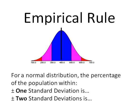What I'm going to do is talk to you about the empirical rule. It's a great rule to know when you're working with a normal distribution. Basically, what the empirical rule tells us is that 68% of the population is within one standard deviation, 95% of the population is within two standard deviations, and 99.7% of the population is within three standard deviations of the mean. In this tutorial, I'll be focusing on the 68% and 95%.